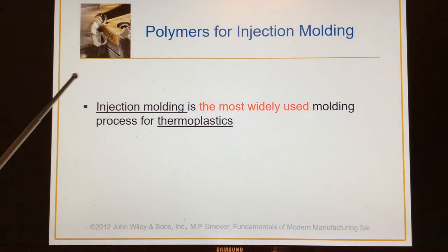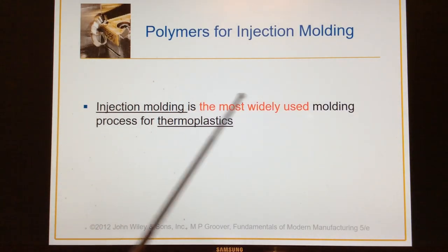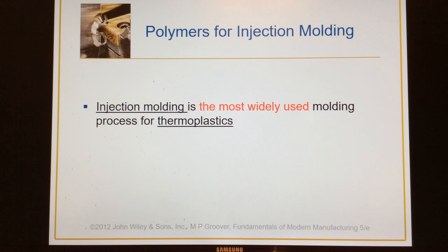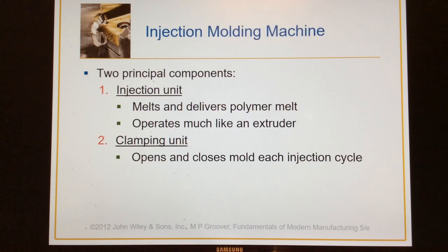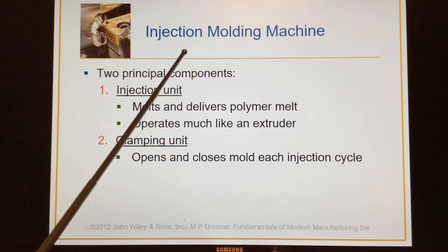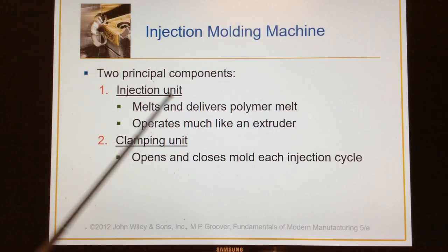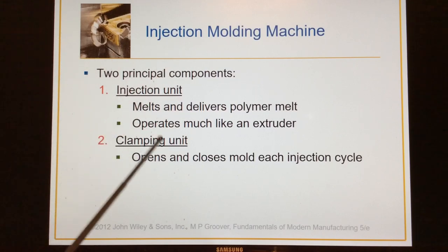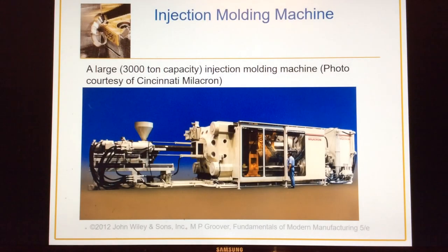Injection molding is the most widely used molding process for all thermoplastics. So many products come out of these machines — it's a marvelous process, especially if you're a mechanical engineering type. As we said before, there are two components to injection molding: injection and clamping. We went through all those in detail.